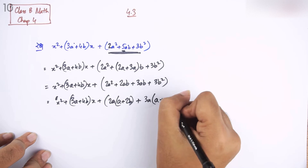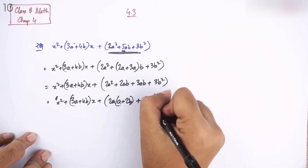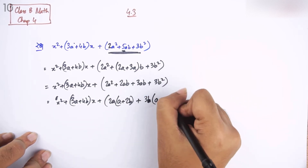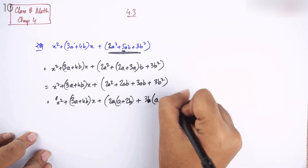A plus thrice b is common. So we get: a plus thrice b.